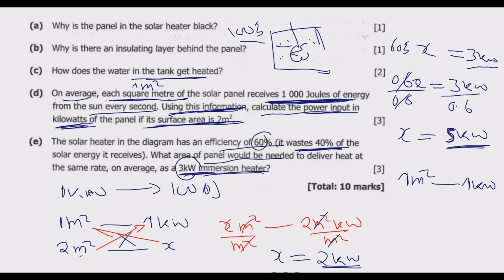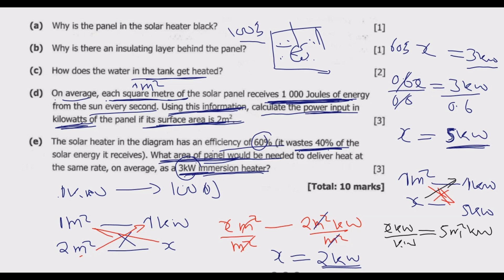From the previous question, 1 meter squared gives 1 kilowatt. We need to find what area gives 5 kilowatts. Using direct proportion: x × 1 kW = 5 m² × 1 kW/m², so x = 5 meters squared. That is the area needed so that when 40% is wasted (2 kilowatts), we end up with 3 kilowatts of heat output.